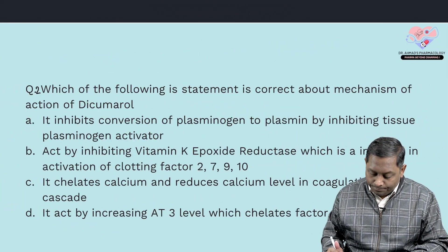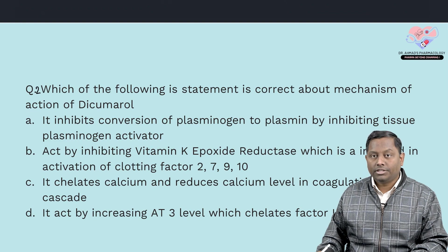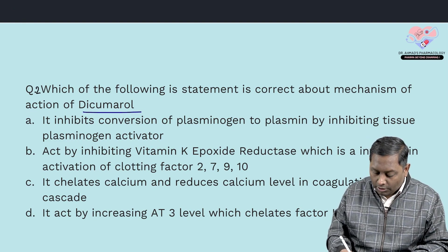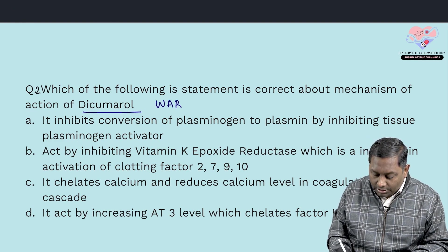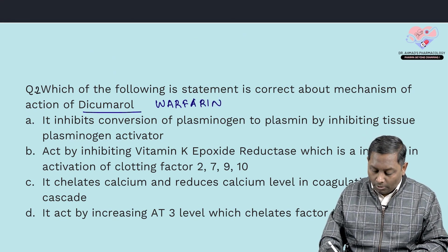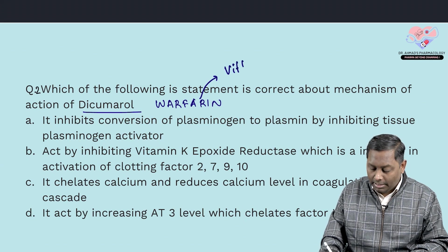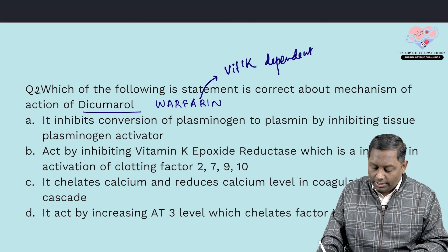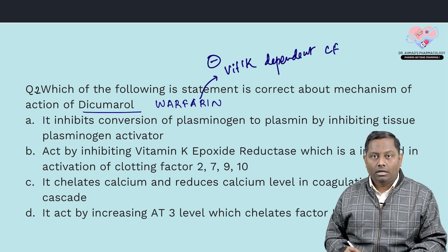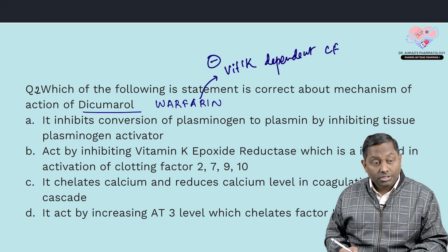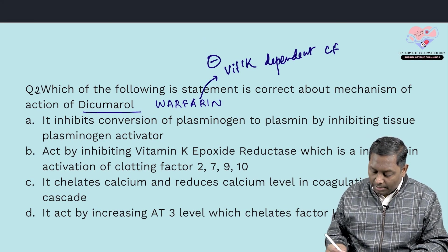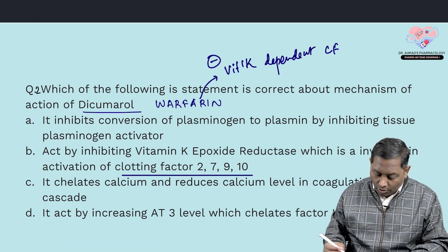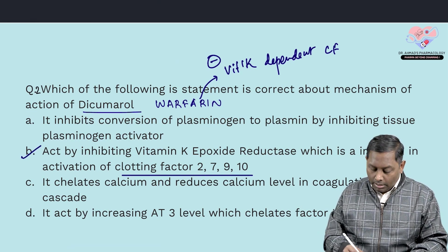The next question: which of the following statements is correct about the mechanism of action of dicumarol? In simple terms, dicumarol's other name is warfarin. The examiner is asking about the mechanism of action of warfarin. Warfarin targets vitamin K-dependent clotting factors by inhibiting vitamin K epoxide reductase, which is involved in the activation of clotting factors 2, 7, 9, and 10.